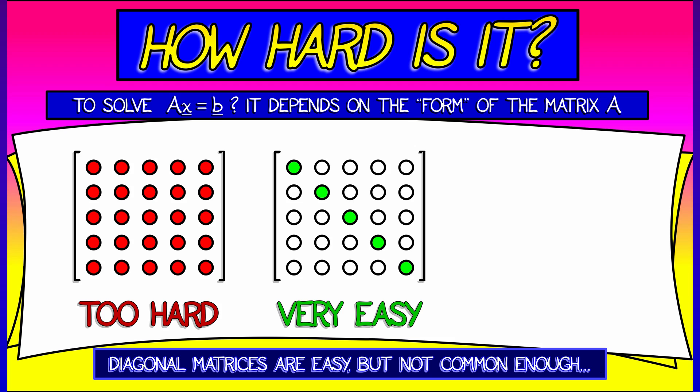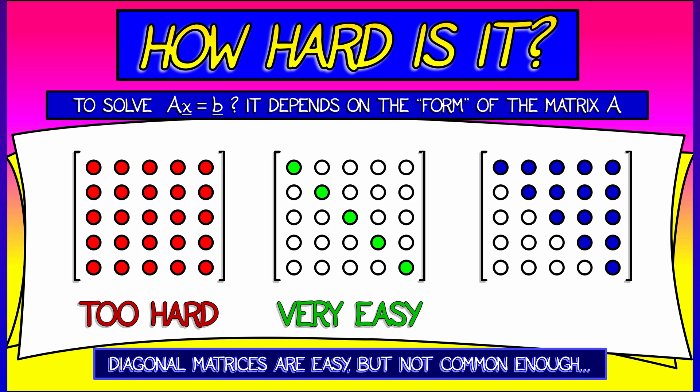But the problem is diagonal matrices, they're not so common. Usually you have a much denser matrix. So the question is, is there a middle ground? Is there something in between where there's enough zeros to solve it, but it's still fairly general?